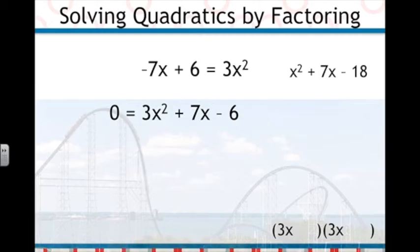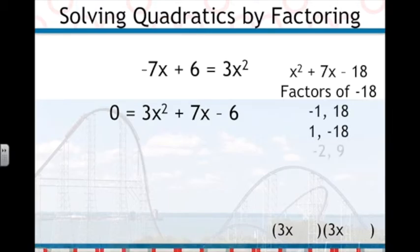Now we'll need to find the factors of negative 18: negative 1 and 18, 1 and negative 18, negative 2 and 9, 2 and negative 9, negative 3 and 6, 3 and negative 6.